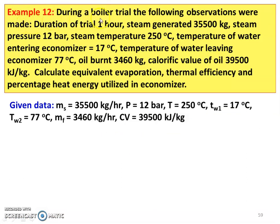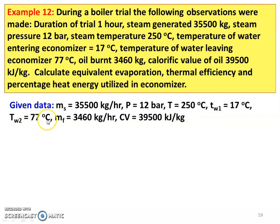The next question, example 12: during a boiler trial, the following observations were made. Duration of the trial: 1 hour. Steam generated: 35,500 kg. Steam pressure: 12 bar. Steam temperature: 250 degrees Celsius. Temperature of water entering the economizer: 70 degrees Celsius. Temperature of water leaving the economizer: 77 degrees Celsius. Oil burnt: 3,460 kg. Calorific value of the oil: 39,500 kJ per kilogram. Calculate the equivalent evaporation, thermal efficiency, and percentage of heat energy utilized in the economizer. Given: mass of steam produced 35,500 kg per hour, pressure 12 bar, temperature 250 degrees Celsius, economizer inlet water temperature 70 degrees Celsius, economizer outlet water temperature 77 degrees Celsius — with this 77 degrees Celsius water entering the boiler — mass of fuel 3,460 kg per hour, calorific value 39,500 kJ per kilogram.